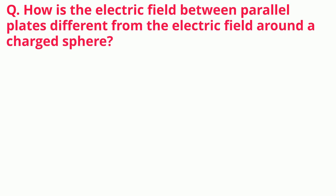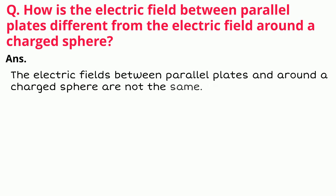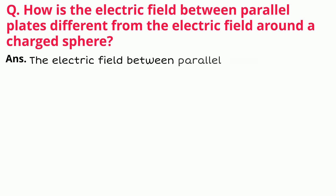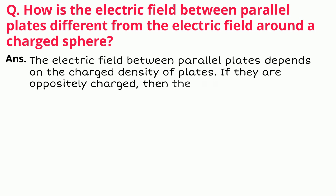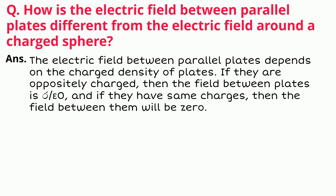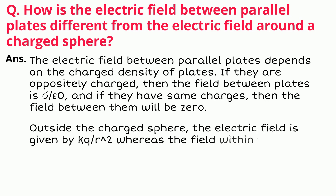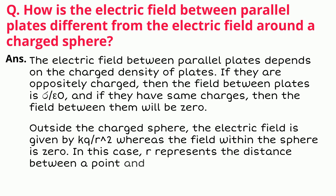FAQ: How is the electric field between parallel plates different from the electric field around a sphere? The electric field between parallel plates depends on the charge density. If oppositely charged, the field is sigma upon epsilon zero; if same charge, the field is zero. Outside a charged sphere, the electric field is given by E equal to KQ upon r², whereas the field within the sphere is zero. Here R represents the distance between a point and the center.